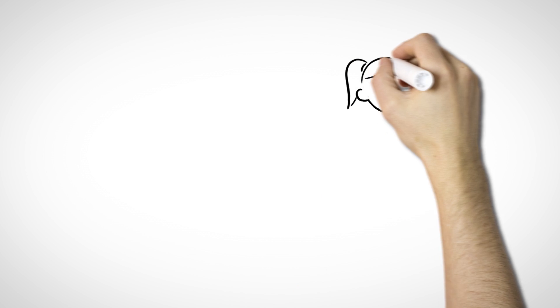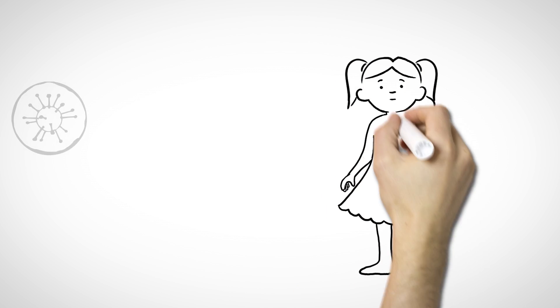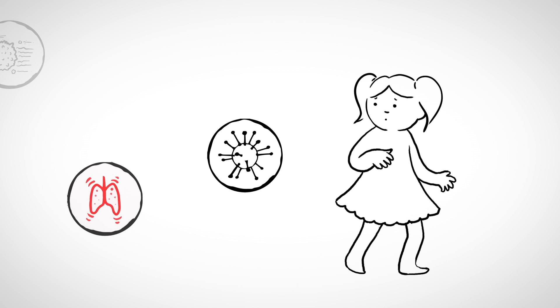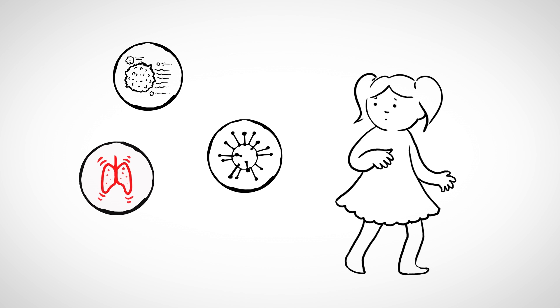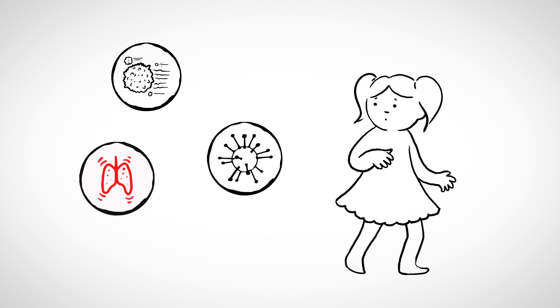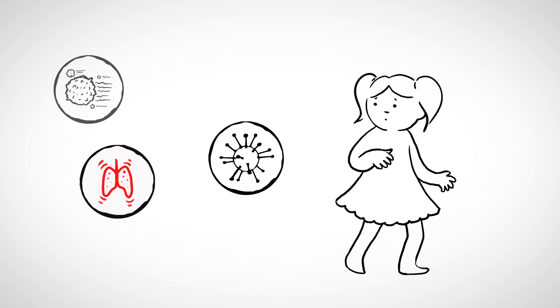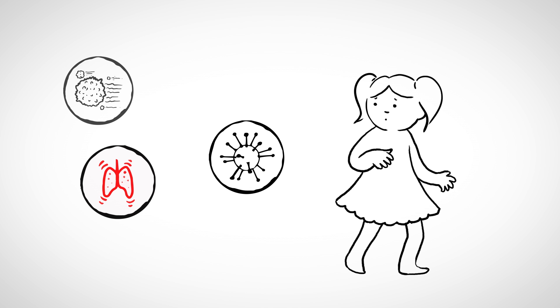Your immune system is designed to protect your body from foreign invaders. However, overreaction of the immune system to harmless particles like pollen or pet dander is called an allergic reaction. For many asthmatics, this overreaction leads to an asthma exacerbation.